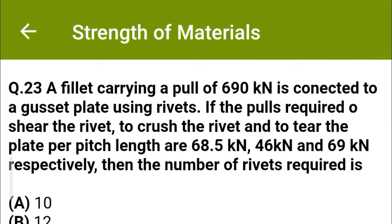Next question: A flat carrying a pull of 690 kN is connected to a gusset plate using rivets. If the forces required to shear the rivet, crush the rivet, and tear the plate per pitch length are 68.5 kN, 46 kN, and 69 kN respectively, then the number of rivets required is — option A: 10, option B: 12, option C: 15, option D: 20. The correct answer is option C: 15.